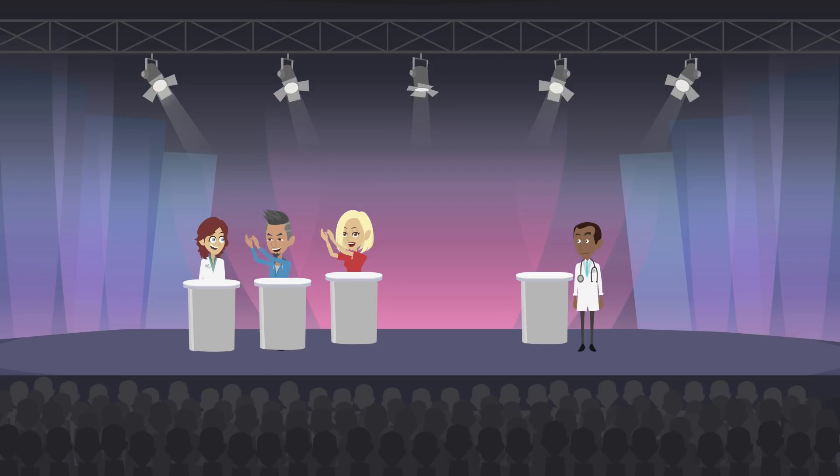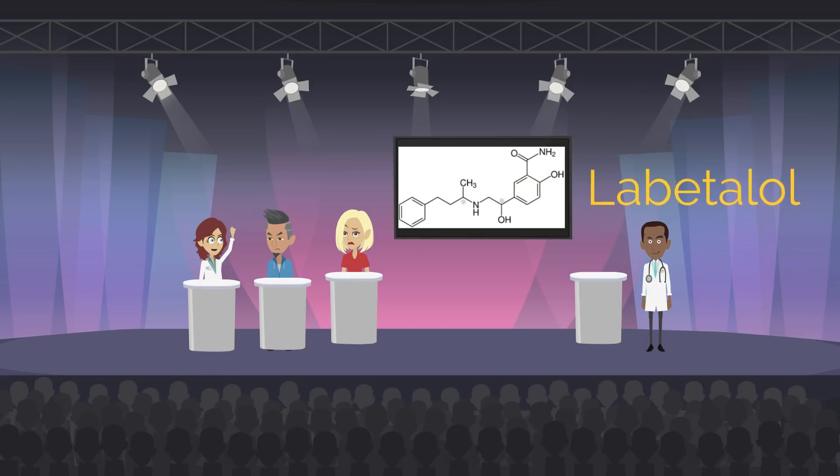Okay, labetalol. How does it work, where is it metabolized, and how fast will it work? Labetalol is a selective alpha-1 and non-selective beta-adrenergic blocker. Labetalol acts on peripheral smooth muscle to cause vasodilation. Beta blockers also decrease arterial blood pressure by reducing cardiac output. It is metabolized in the liver and has an onset of action of about 10 minutes IV or 2 hours orally. Correct!